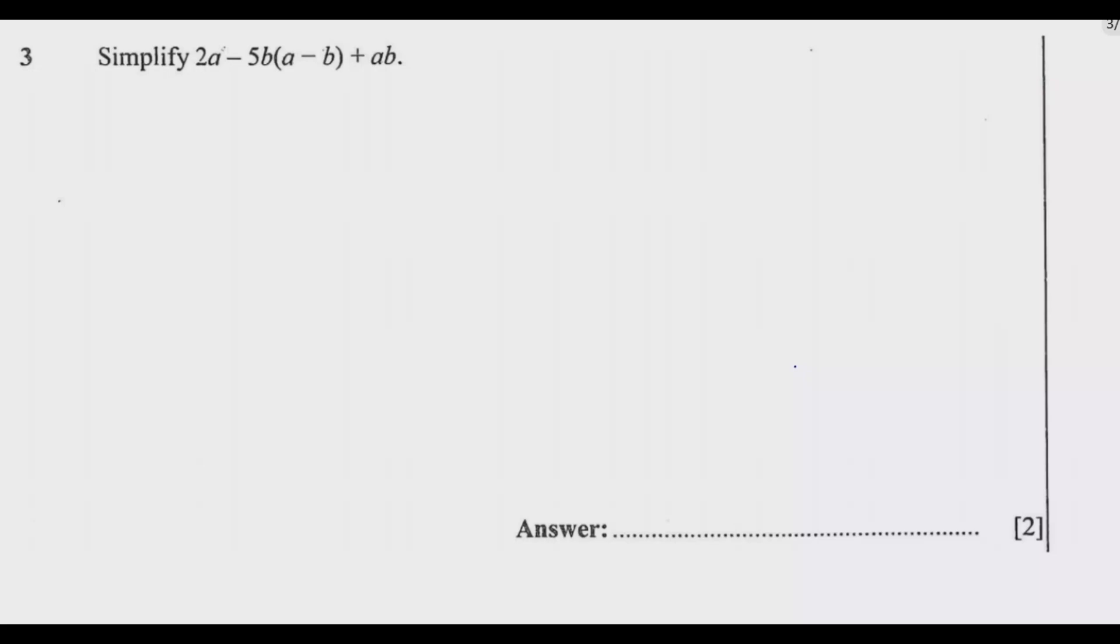Now with that, let us look at question three. Question three reads: Simplify 2a − 5b(a − b) + ab. If you look at this question, what they are trying to assess you is how to deal with negatives. That's the only thing that they are assessing in this question, so just be careful with negatives as we are multiplying.